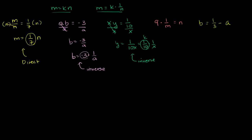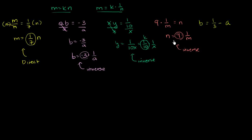Now, 9·(1/m) = n. This is already done for us. Flipping both sides, we get n = 9·(1/m) — n equals some constant times 1/m. So n varies inversely with m. And remember, if n varies inversely with m, that also means m varies inversely with n. Those two things imply each other.